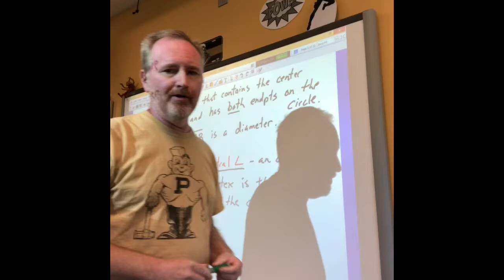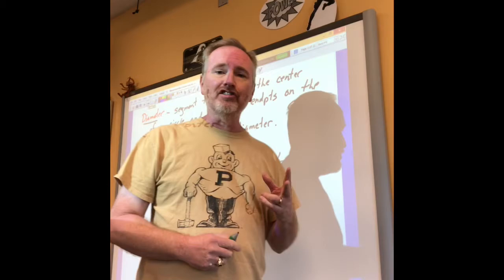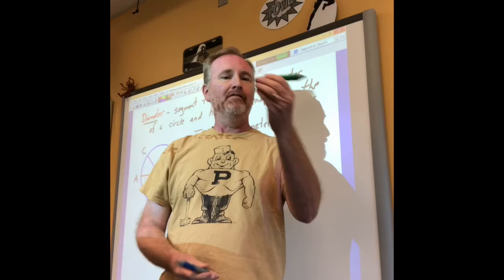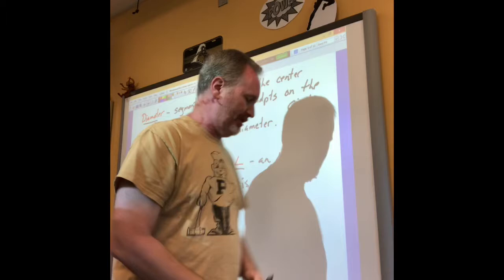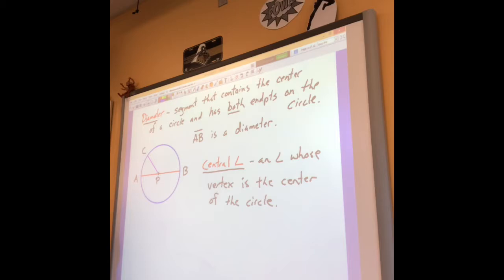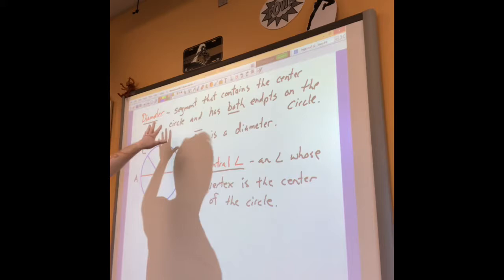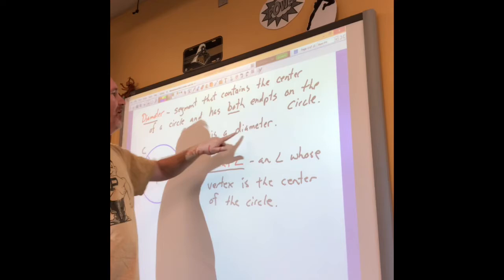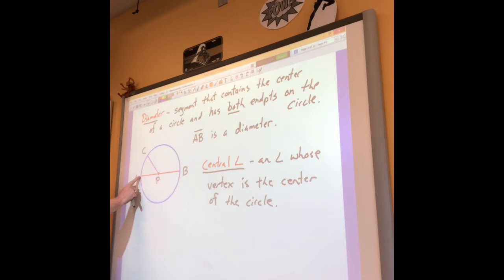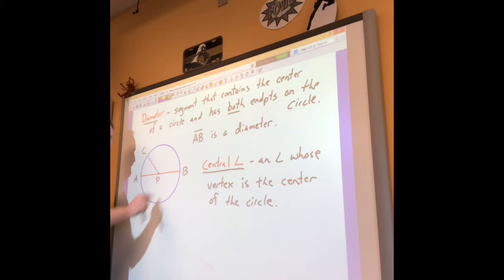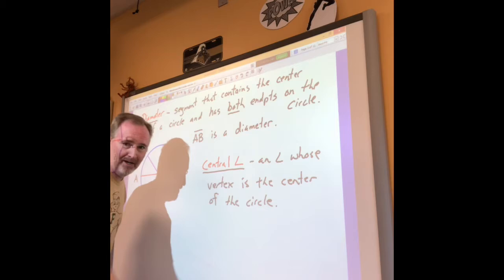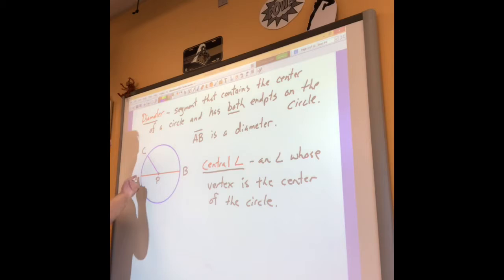The radius has an older brother named diameter. The diameter is always twice as long as the radius because it's made up of two radii going back to back. A diameter is a segment that contains the center of the circle, passing through the center with both endpoints on the circle. In this example, AB would be a diameter - it starts at one endpoint on the circle, passes through center P, and goes to the other side. Don't call it PB - a diameter is named by its two endpoints, so just call it AB or BA.